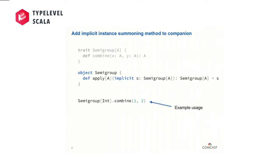I picked Semigroup to start today because it's pretty uninteresting from a language feature perspective — we're not using higher-kinded types, there's nothing really fancy going on here. Instead, what I want to look at is all the things that we're going to decorate it with, that we're going to obfuscate this definition with to make this usable in Scala. One of the first things I want to do is provide this implicit summoning method — to be able to say give me a semigroup of int, look up an implicit scope, find me a semigroup of int and let me call combine on it.